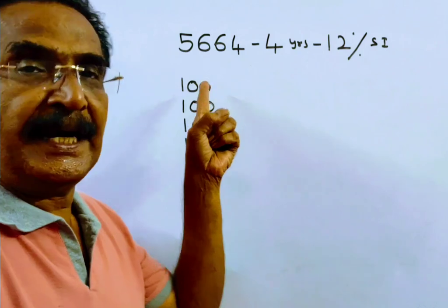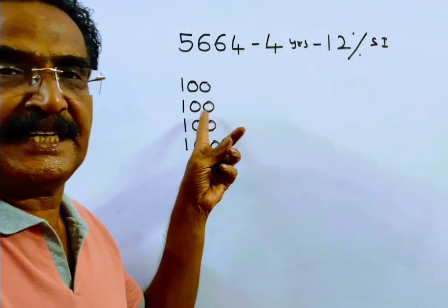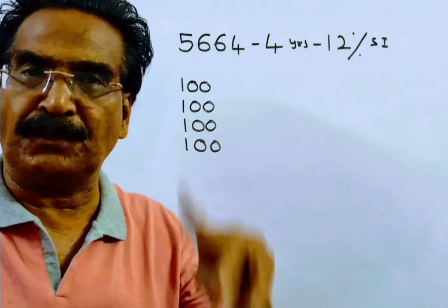That means you pay 100 at the end of the first year, 100 at the end of second year, 100 at the end of third year, and 100 at the end of fourth year.